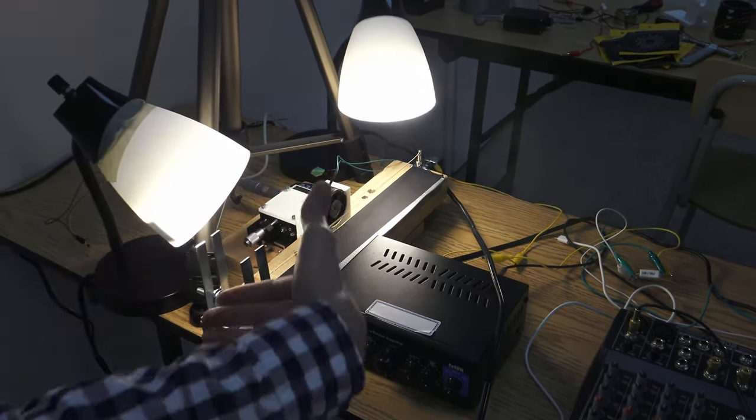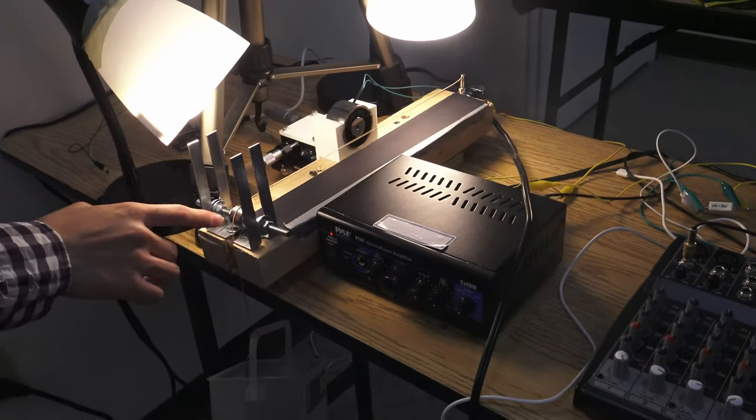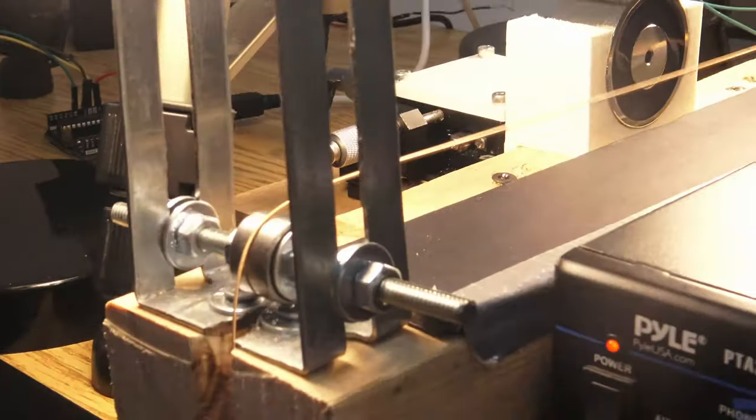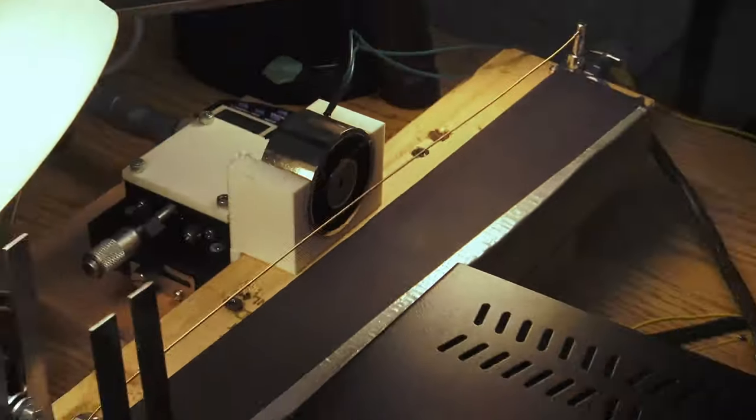And then here on the mechanical side we just have a piece of wood as our base. And then here we have this part where the string can sort of hang down and then we have some weights hanging off the bottom. Now you can see the string is vibrating because we are passing in a signal that is 14 hertz and that sort of matches the resonance frequency of the string.